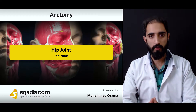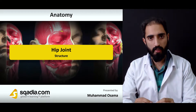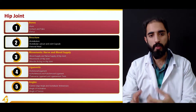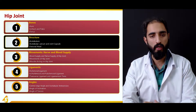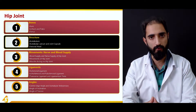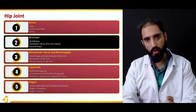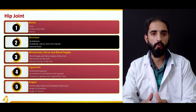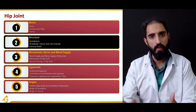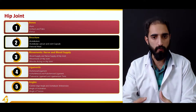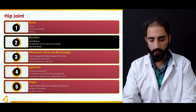Welcome ladies and gentlemen, my name is Muhammad Osama and we are talking about the hip joint specifically. In this lecture we're going to talk about the structure of the hip joint. Previously we talked about the bones involved in the makeup of the hip joint including the ilium, ischium, pubis, and femur. In this lecture we are specifically going to talk about the structure of the hip joint, which includes the acetabulum — the concave bony partner — the femoral head — the convex bony partner — and the acetabular labrum and the joint capsule.